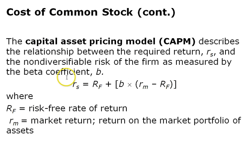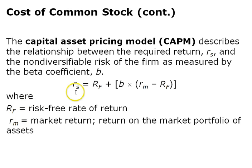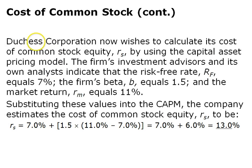The capital asset pricing model (CAPM), discussed in the previous chapter, can also be used to calculate the return on stock. The formula is: R_S equals the risk-free rate plus beta times (market return minus risk-free rate). This is a great formula to use if the company pays no dividends. For Dutchess Corporation using CAPM with a risk-free rate of 7%, beta of 1.5, and market return of 11%, plugging these variables gives a cost of capital of 13%.